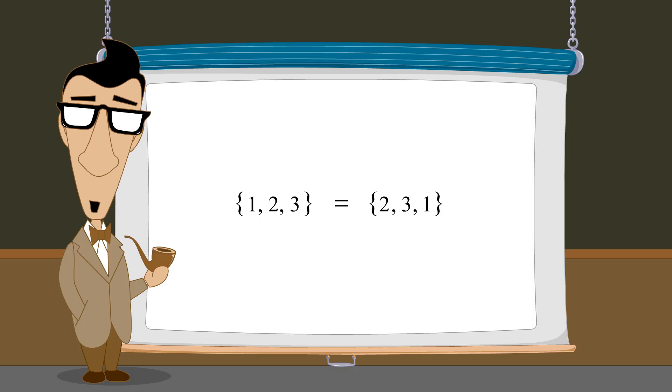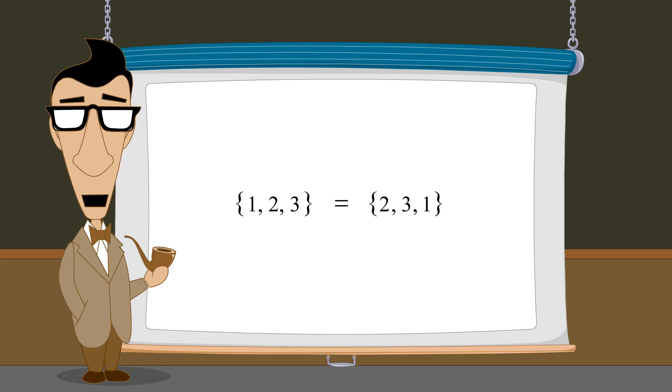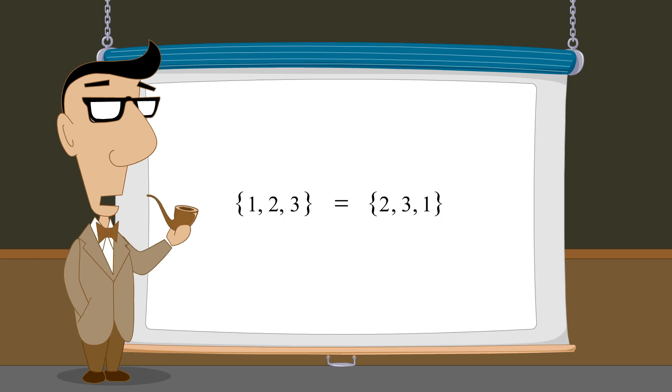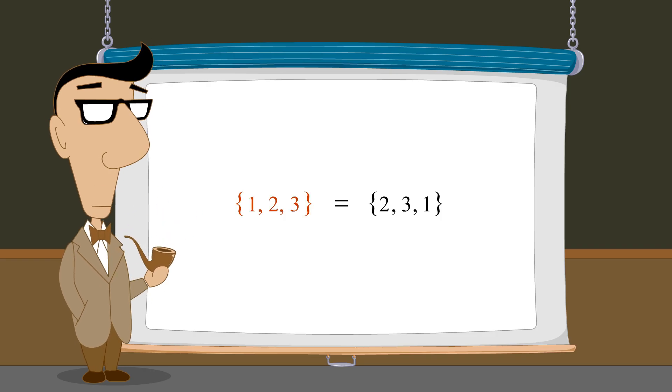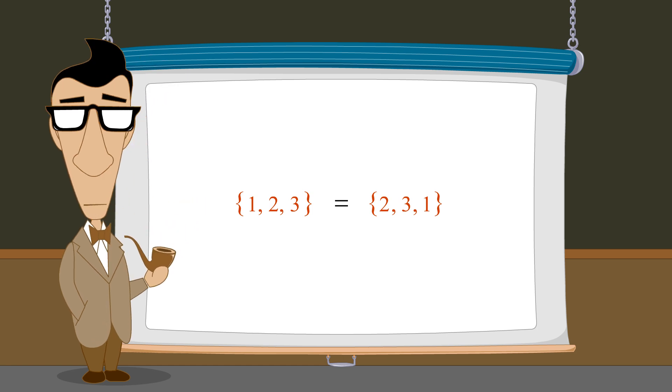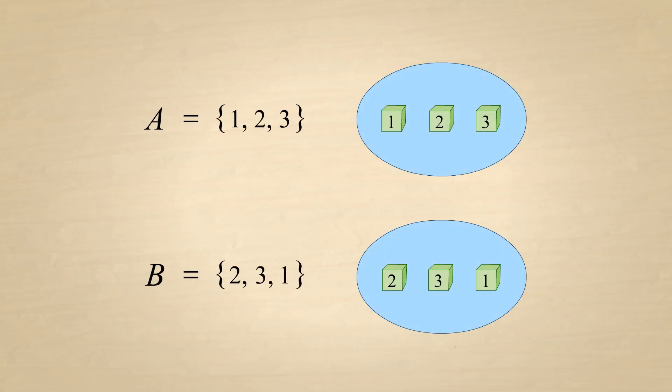This is because the order in which the elements of a set are listed is irrelevant. The set consisting of 1, 2, and 3 is exactly the same as the set consisting of 2, 3, and 1. The list does not imply that there is any particular order to the elements. It only says that every element listed is a member of the set. So if sets A and B contain the same elements, then they are equal.